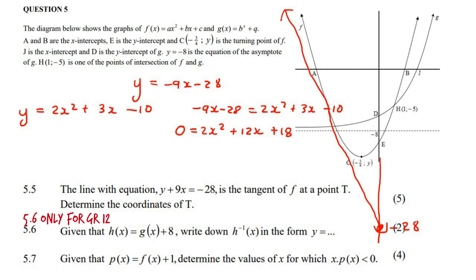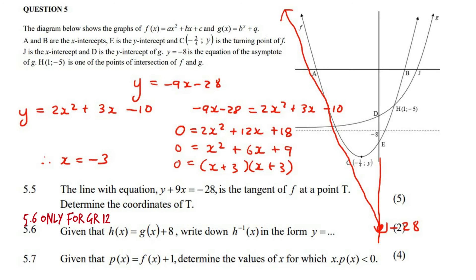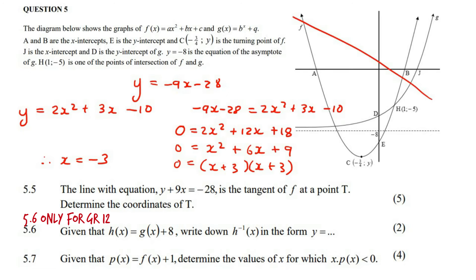Dividing by 2 gives x squared plus 6x plus 9, which factorizes as (x plus 3)(x plus 3). We only get one x value, which makes sense — if there were two, the line wouldn't be a tangent but would cross the parabola in two places. So the only answer is x equals minus 3.